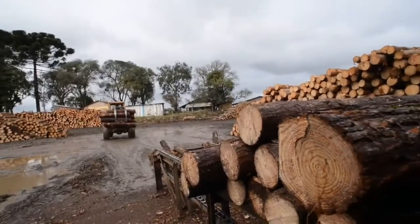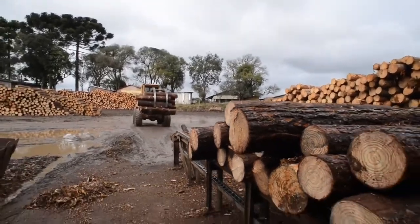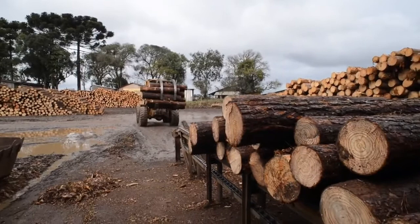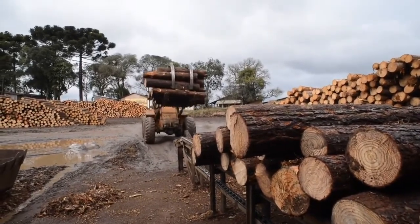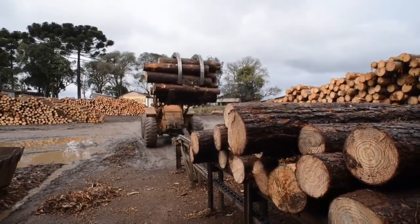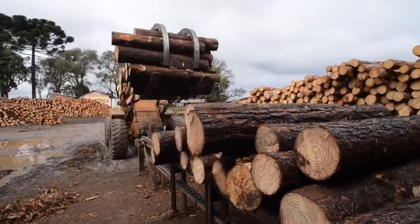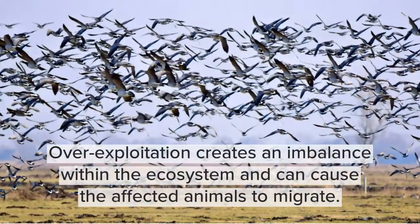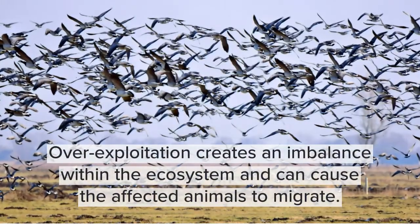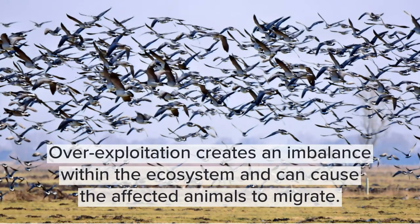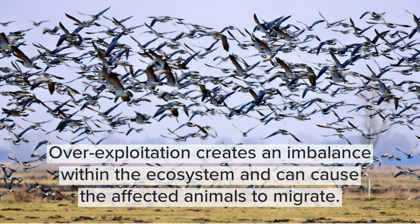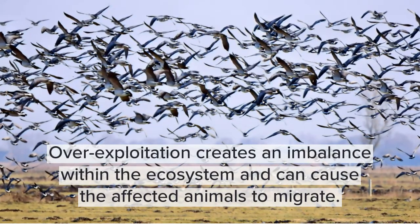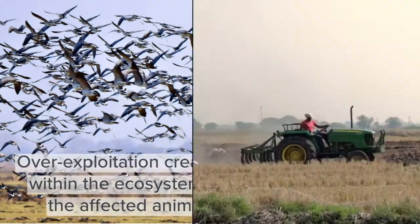1. Overexploitation. Earth's natural resources are being depleted at an alarming rate. Vast areas of forest cover are cleared to make room for agriculture and other activities. This leads to the loss of habitat for some animal species. Overexploitation creates an imbalance within the ecosystem that can cause the affected animals to migrate. The loss of biodiversity in an ecosystem can cause damage to its functions.